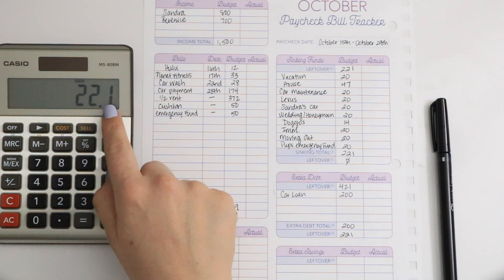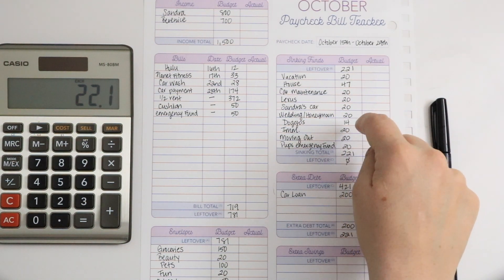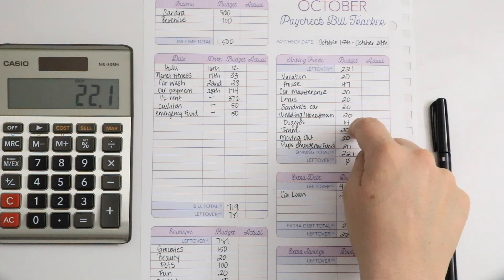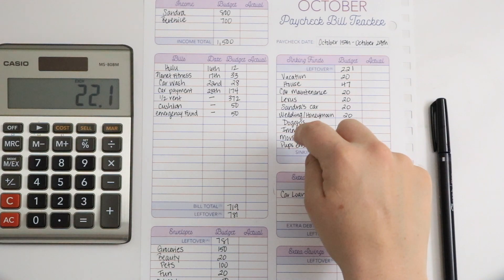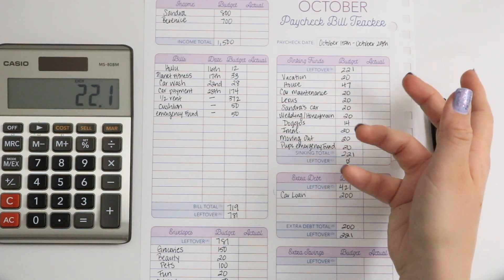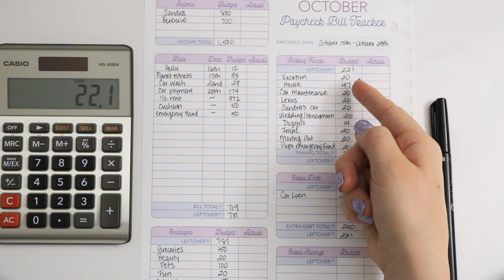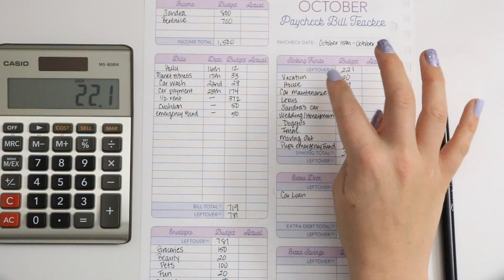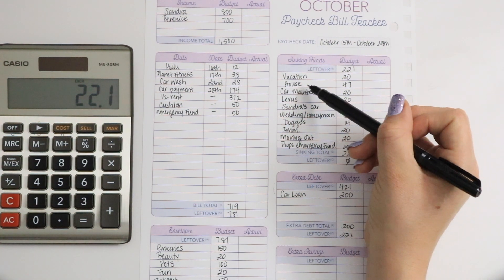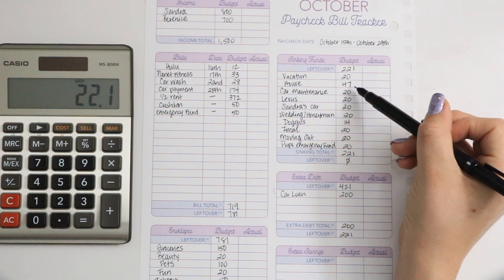So that gives me 22 with 10 cents. So I add $20 to each category, except doggos. I do 12, but today I'm doing 14 because last paycheck I only did 10. So I did 14 for doggos. That gives me a little bit more money to add wherever I want. Then that extra money I add towards my most important sinking fund, and that is my house. So I added $27 extra towards that.